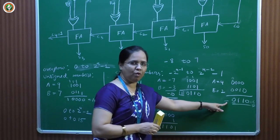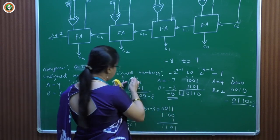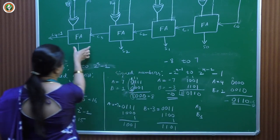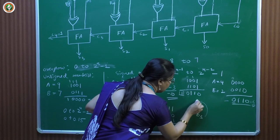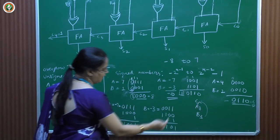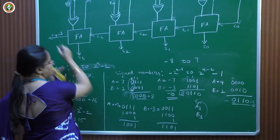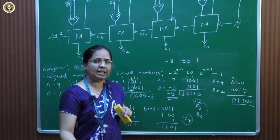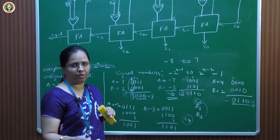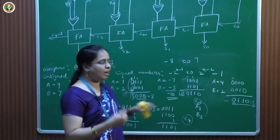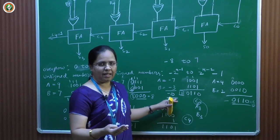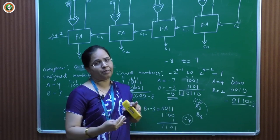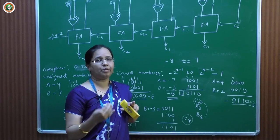We can conclude: if the carry-in and carry-out from the MSB position are different, there is an overflow; if they are the same, there is no overflow. In the 4-bit adder, the MSB position adds A3 and B3 using the fourth full adder. The carry-in to this adder is C3 and the carry-out is C4. So if C3 and C4 are different, there is overflow for signed numbers. This is exactly what an XOR gate detects — output 1 when inputs differ, 0 when same.